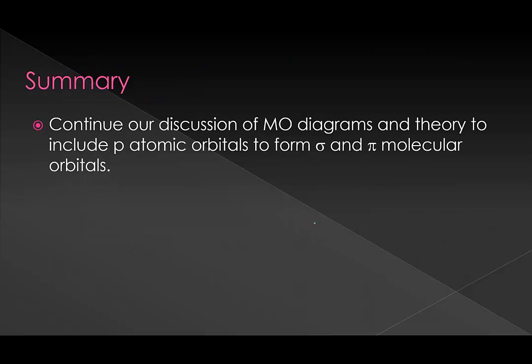In this video we've walked through how to make MO diagrams when our atoms have valence p orbitals to combine into molecular orbitals. We saw that they can combine two different ways: end on end, which creates a sigma orbital, or side on side, which creates pi orbitals. We saw the energy levels of those, saw how there are bonding and anti-bonding orbitals, and practiced making the molecular energy level diagrams for all of the second-row homonuclear diatomics. We also reviewed bond order by determining it for each one.